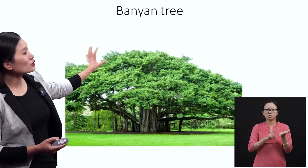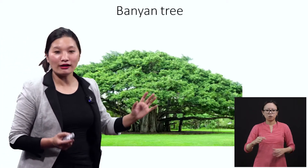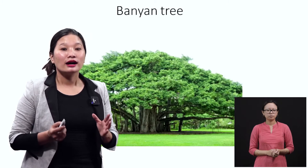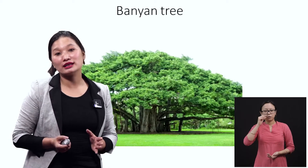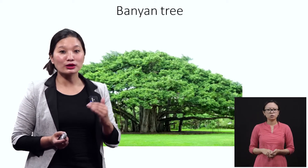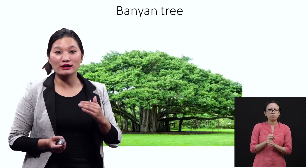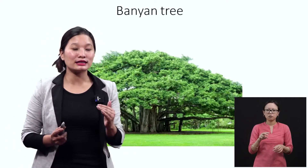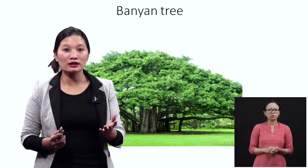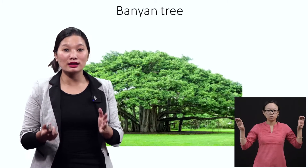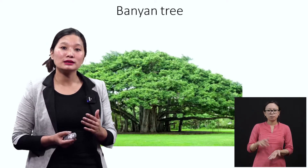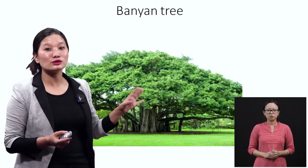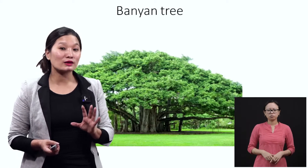The banyan tree is important because our friend the boy is going to use it as a grandstand view — a place where you have a good view of things. Like the most expensive ticket at a sports event or movie, that best seat is the grandstand view. So the young boy is going to use this banyan tree as his grandstand view.